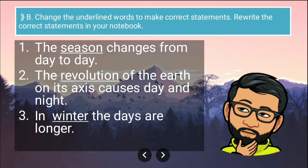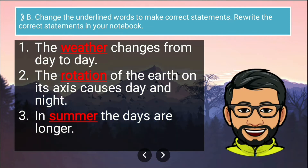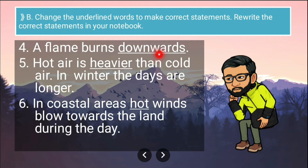Now the next section: change the underlined words to make the statements correct. The first incorrect statement is 'the season changes from day to day' — the correct version is 'the weather changes from day to day'. Second: 'the revolution of earth on its axis causes day and night' — the correct version is 'the rotation of the earth on its axis causes day and night'. Third: 'in winter the days are longer' — the correct version is 'in summer the days are longer'.